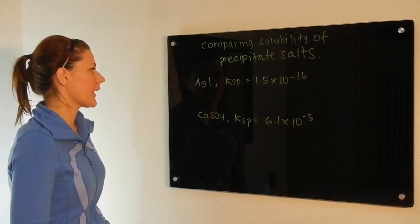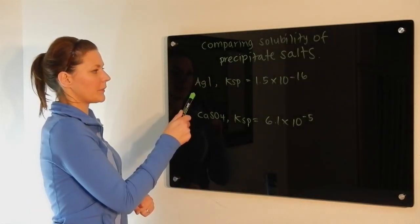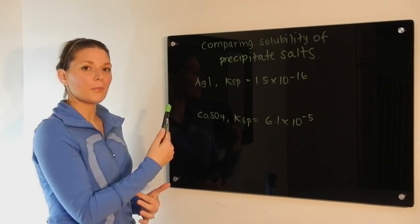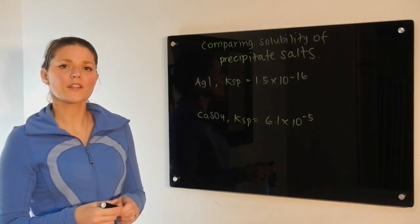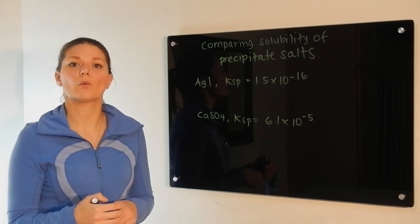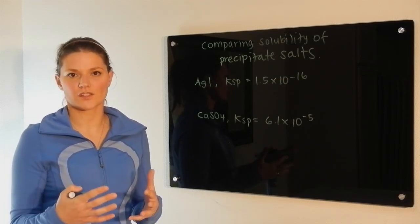So if we take a look at the example we have, we're looking at the precipitate silver iodide and comparing it to that of calcium sulfate. When you're doing this, you're going to want to consider the equilibrium that will be established once they have dissociated.